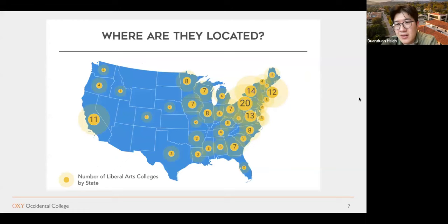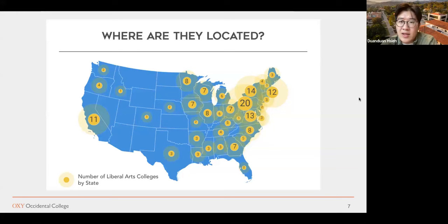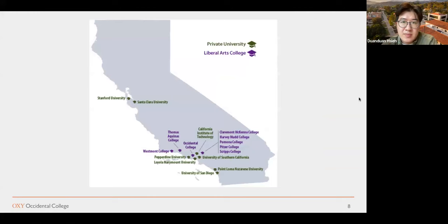Liberal arts colleges are mostly on the East Coast, as they were the founding colleges in the US, starting in the 1700s before the US was even founded. Liberal arts colleges were the staple and pinnacle of higher education. But you'll see some spread across to the West Coast as well. In California, we have 11 liberal arts colleges. The most notable ones are Occidental College and the Claremont Colleges, which is a consortium of five independent colleges.